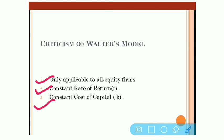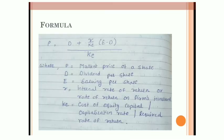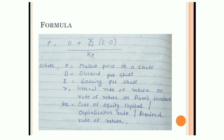Now let us look at the formula. This is the one formula you need to understand carefully and remember, because it is the only formula you need to use in problems. The formula is: P is equal to D plus R upon Ke into bracket E minus D, divided by Ke.